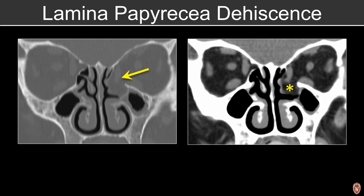Lamina papyracea dehiscence is one that our surgeons will definitely want to be alerted to, because if there is lamina papyracea dehiscence, the surgeons can potentially enter into the orbit inadvertently. This is one that we definitely want to include in the impression of our reports.